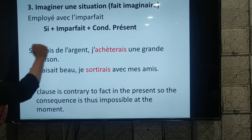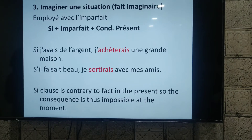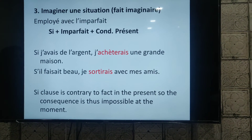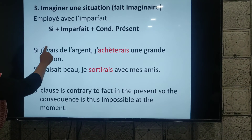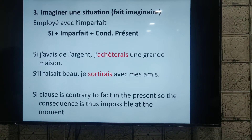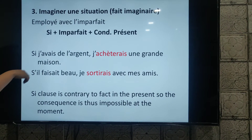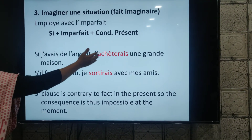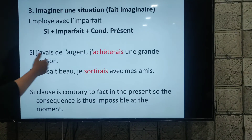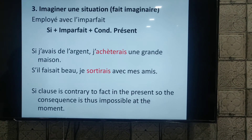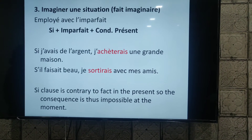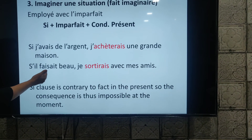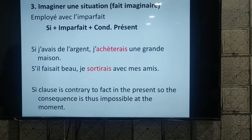Take this example: si j'avais de l'argent, j'achèterais une grande maison. The condition is 'if I had money' — this is in imparfait — and 'I would buy a big house' is the consequence in conditionnel présent. If this condition is possible, then only this consequence will be possible. Another example: si il faisait beau, je sortirais avec mes amis — 'If the weather were good, I would go out with my friends.'